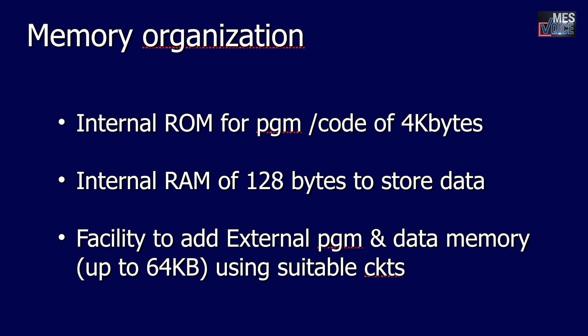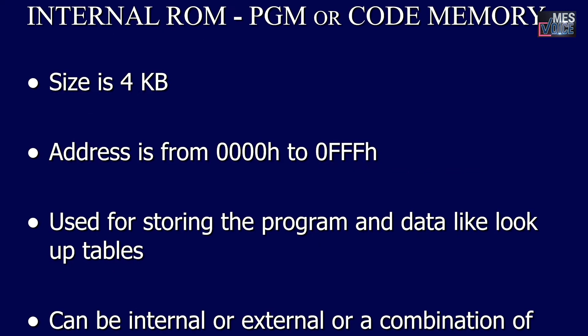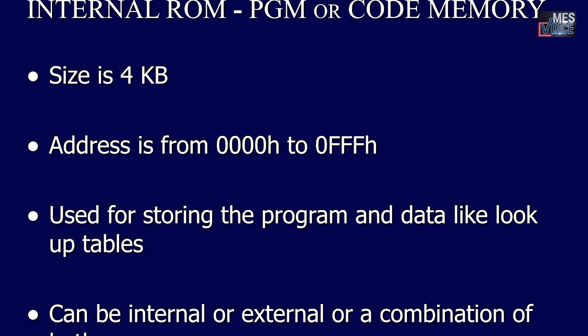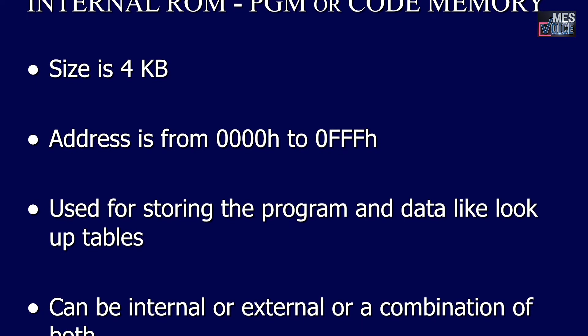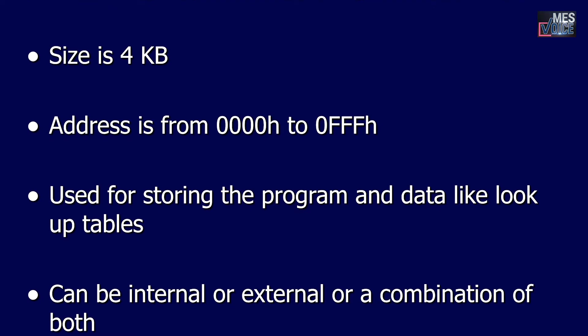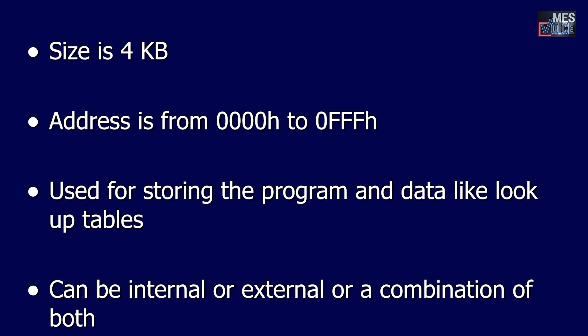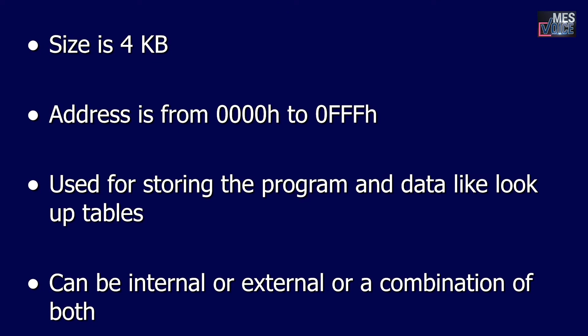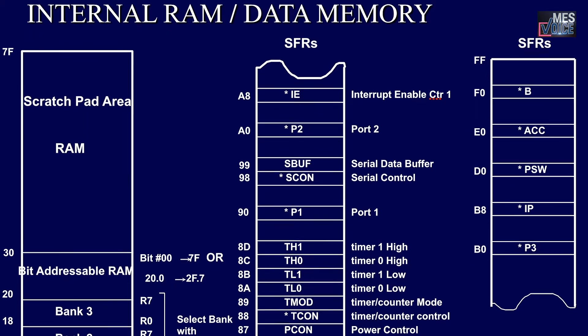Coming to the memory organization: it has internal ROM for storing the program code, with a size of 4 kilobytes. It has internal RAM of 128 bytes to store data, and has a facility to add external program and data memory of up to 64 kilobytes using suitable circuits. Internal ROM is also called program or code memory; its address is from 0000H to 0FFFh. Data memory is used for storing the program and data like lookup tables; it can be internal, external, or a combination of both.